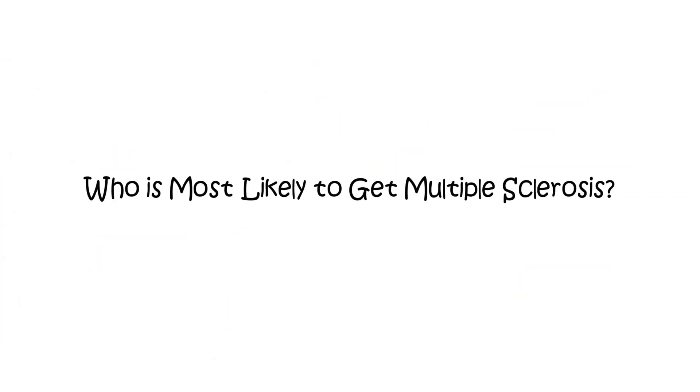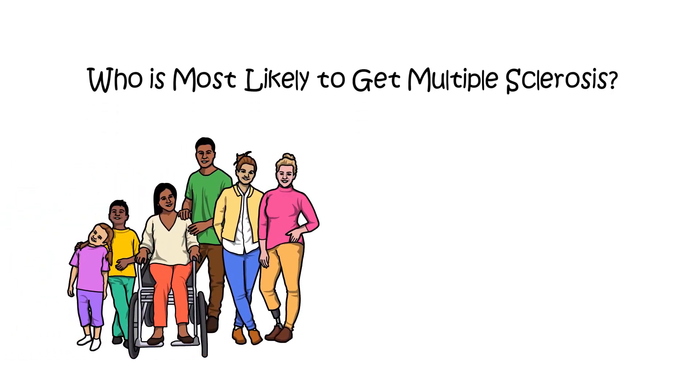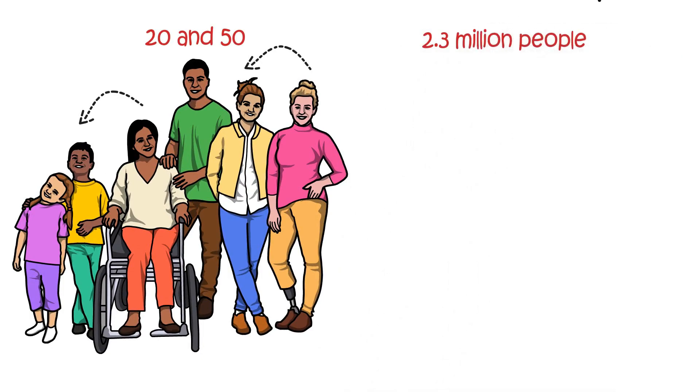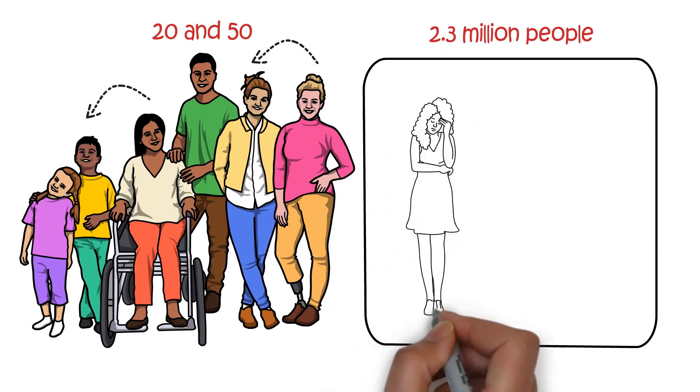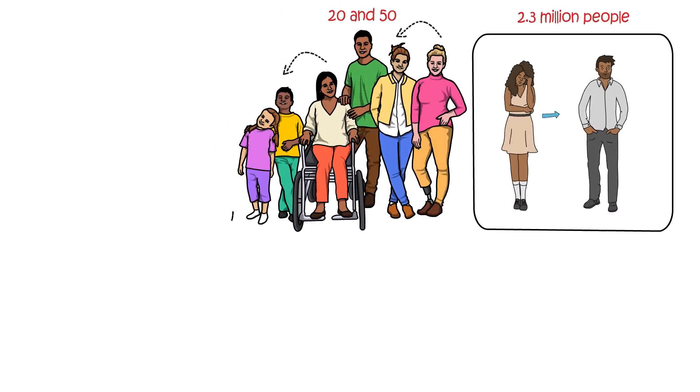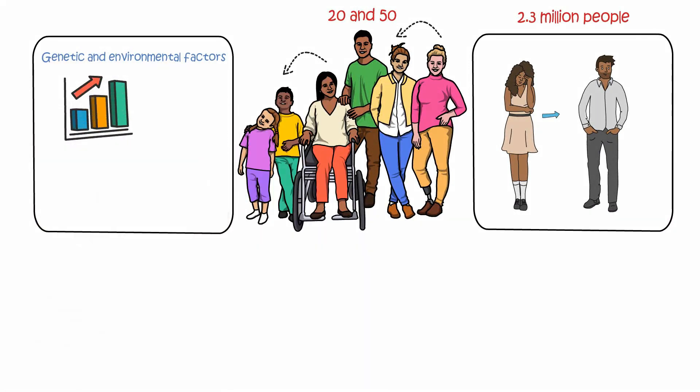Who is most likely to get multiple sclerosis? Multiple sclerosis is most commonly diagnosed in people between the ages of 20 and 50, but it can affect anyone at any age. It is estimated that over 2.3 million people worldwide have multiple sclerosis. Women are twice as likely as men to be diagnosed with the disease. There is also some evidence to suggest that certain genetic and environmental factors may increase the risk of developing MS.